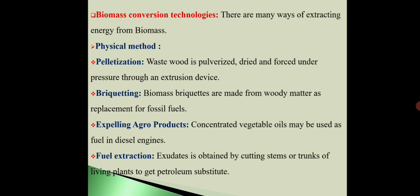Next is briquetting — biomass briquettes are made from woody matter as a replacement for fossil fuels. Third is expelling agro-products, where concentrated vegetable oils may be used as fuel in diesel engines. Next is fuel extraction: exudates are obtained by cutting stems or trunks of living plants to get a petroleum substitute, or plants are crushed directly to get this petroleum substitute.